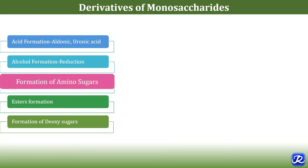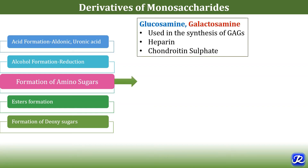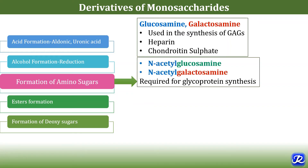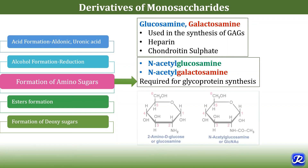Amino sugars are also formed from monosaccharides. When one or more hydroxyl groups of monosaccharides are replaced by amino groups, amino sugars are formed. Examples include glucosamine and galactosamine. These amino sugars are used in the synthesis of glycosaminoglycans like heparin and chondroitin sulfate. Amino sugars may also be acetylated — for example, N-acetylglucosamine and N-acetylgalactosamine — and these are required for glycoprotein synthesis.